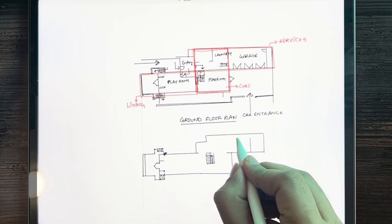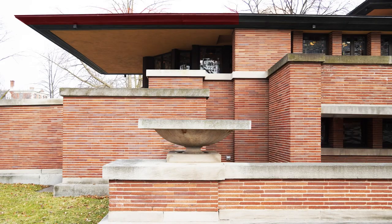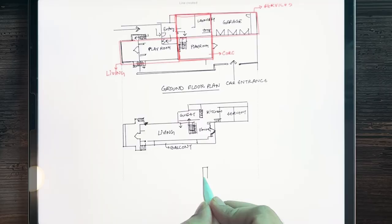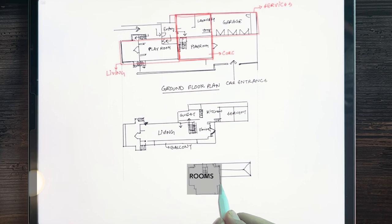Wright further extended the house with balconies and shaded cantilever projections. The 20-foot cantilever of the house is still a structural marvel. The top floor contains all the bedrooms — the master bedroom, children's bedroom, and guest bedroom — all connected with the staircase service.